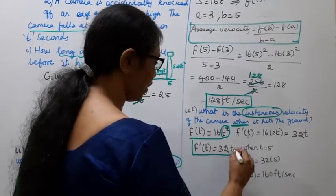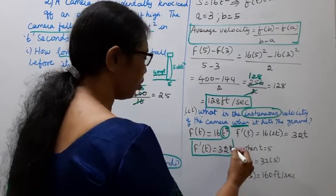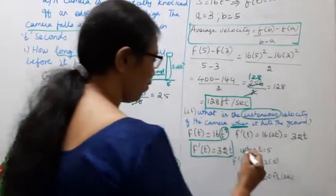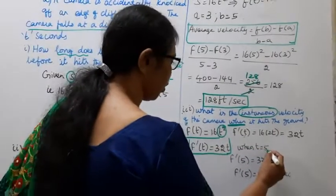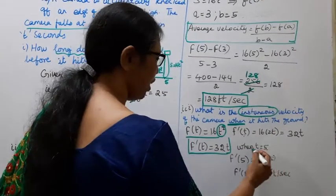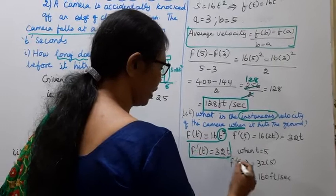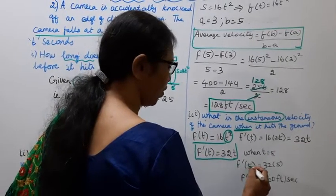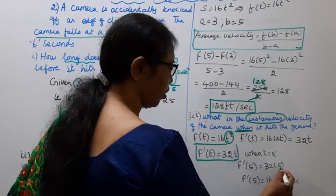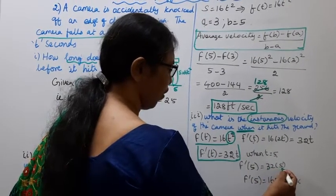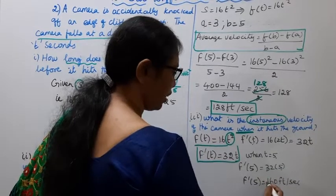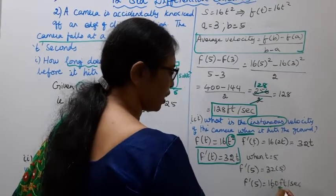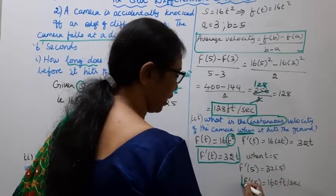f dash of t equals 32t. We know t equals 5 seconds when the camera hits the ground. So when t equals 5, f dash of 5 equals 32 times 5, which equals 160 feet per second.